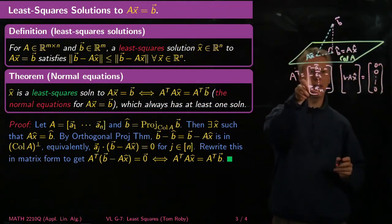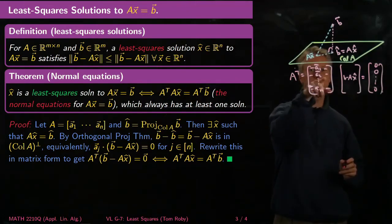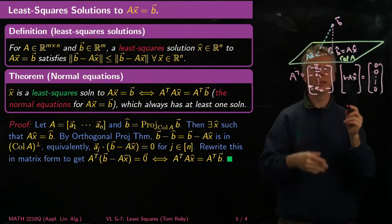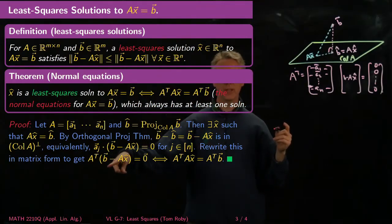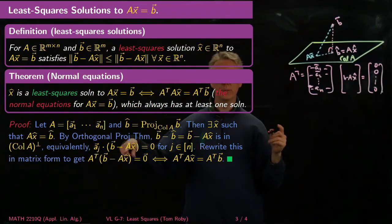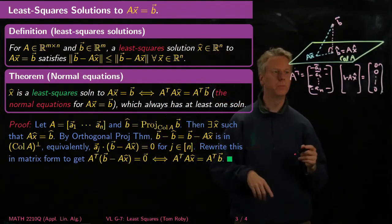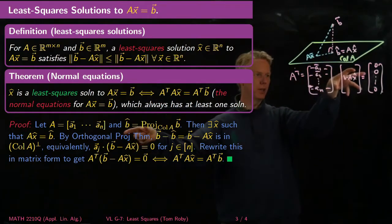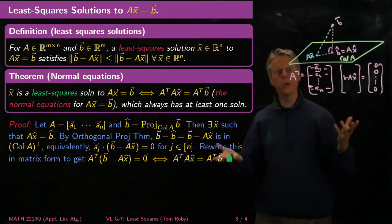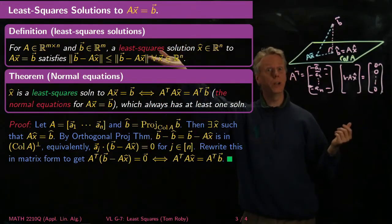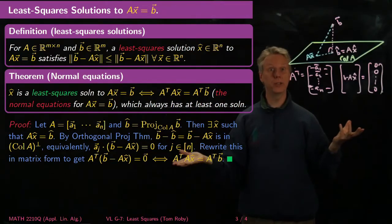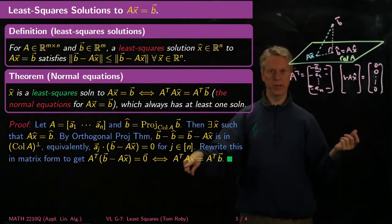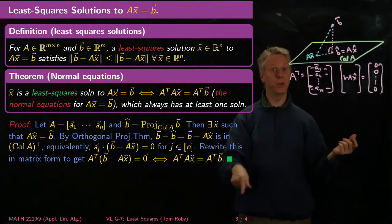But that's exactly saying that A transpose applied to B minus AX is equal to zero. And if you rewrite that, expand it out, I get A transpose times B minus A transpose AX equals zero. So these two things have to be equal. So it's really just some bookkeeping here that takes this being in the column space and makes it equivalent to this matrix equation. And this is really great, because now we've taken a problem that we didn't know how to solve and turned it into a problem that we know how to solve perfectly well, which is solve an equation. A transpose AX equals A transpose B.